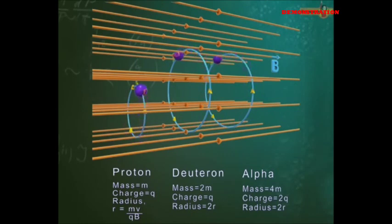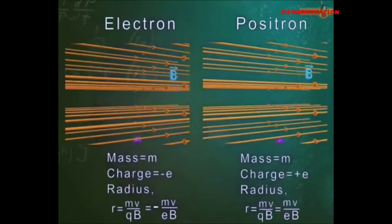Next, we consider an electron and a positron moving with the same speed in the same direction. On applying the field, they traverse the circular path in opposite directions due to opposite charges.